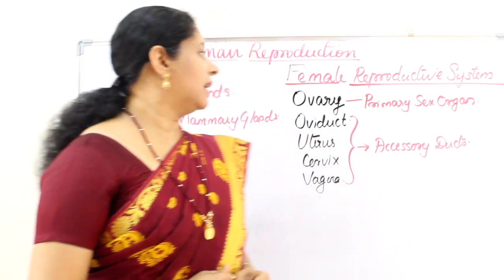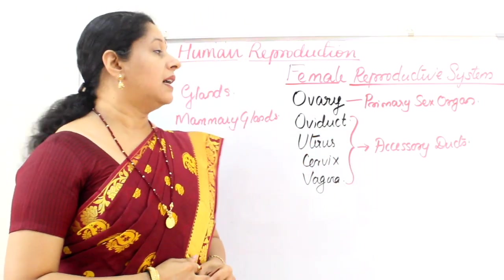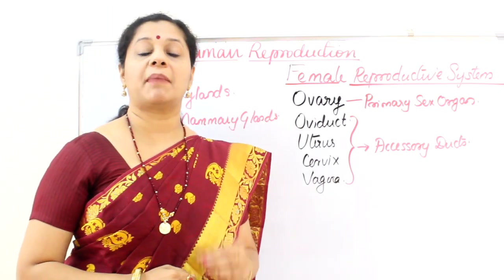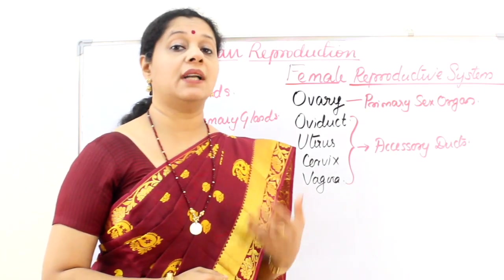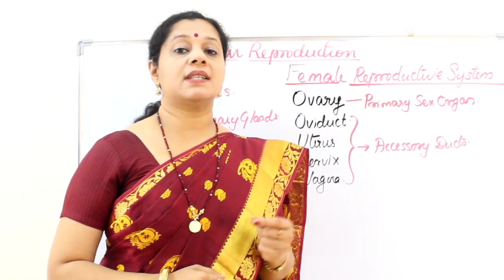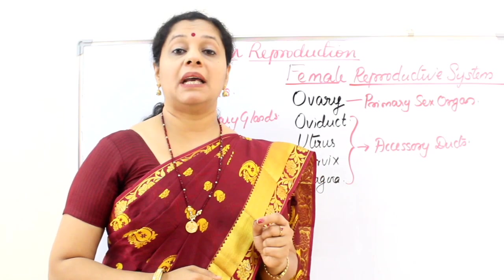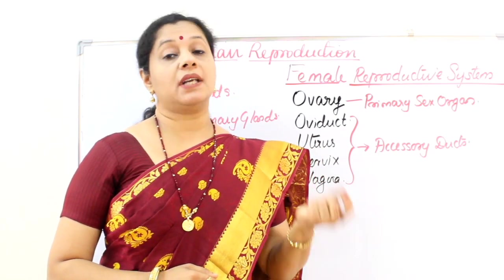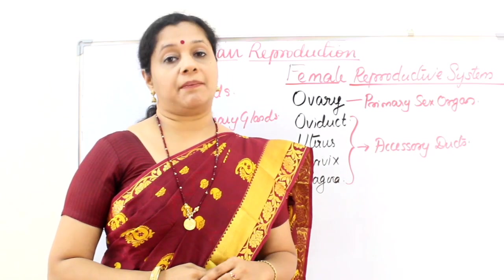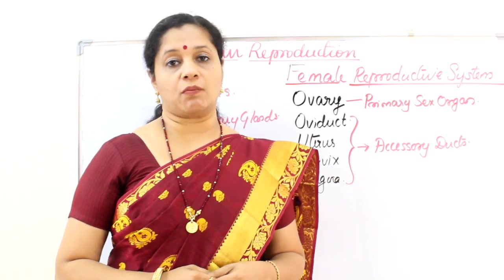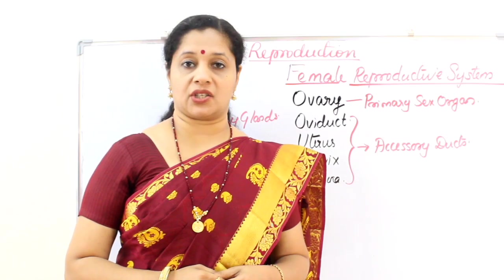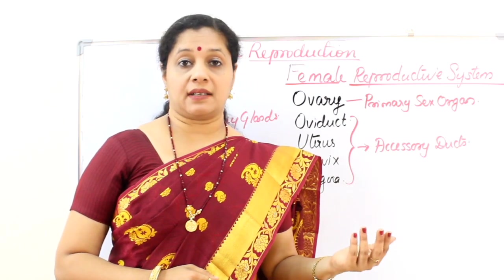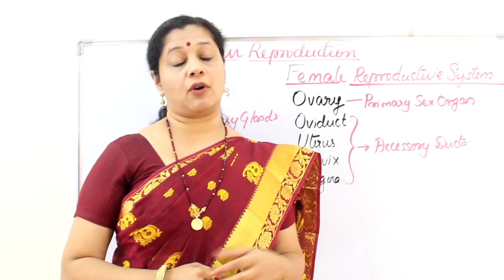The female reproductive system mainly consists of a pair of ovaries, which are called the primary sex organs. We call them primary sex organs because this is where gametes are produced. The female gamete is called an ovum, and it is produced within the ovaries. The ovaries also secrete ovarian hormones like estrogen, progesterone, etc., which are needed for female sexual characteristics and the formation of the ovum.